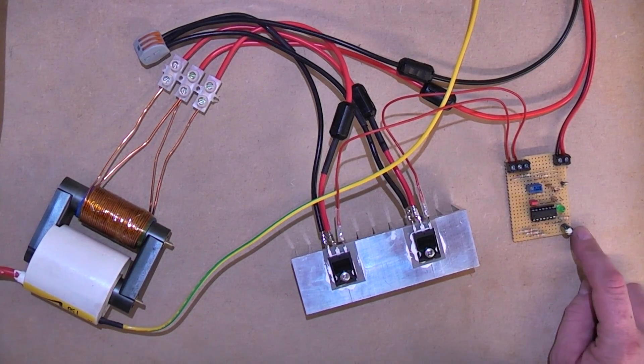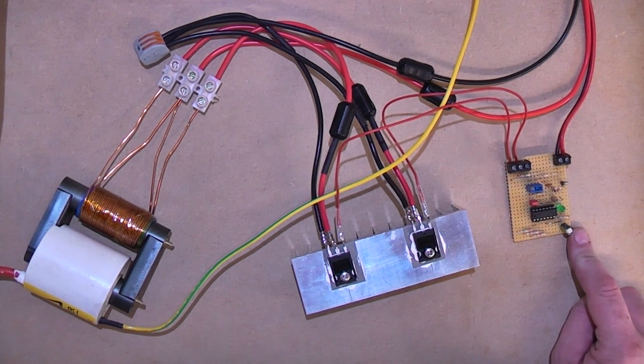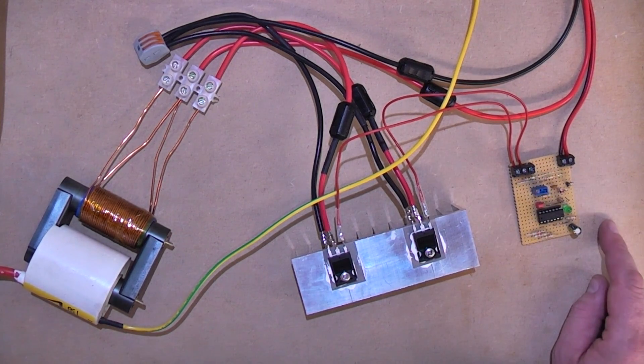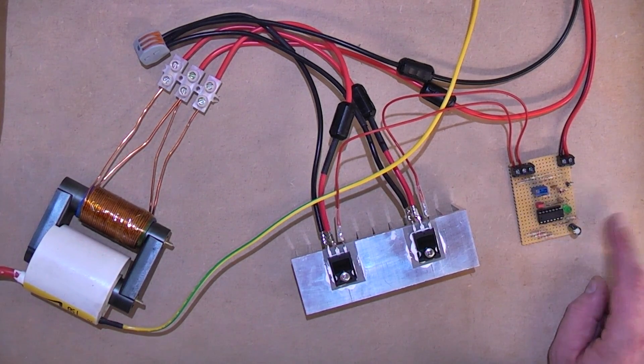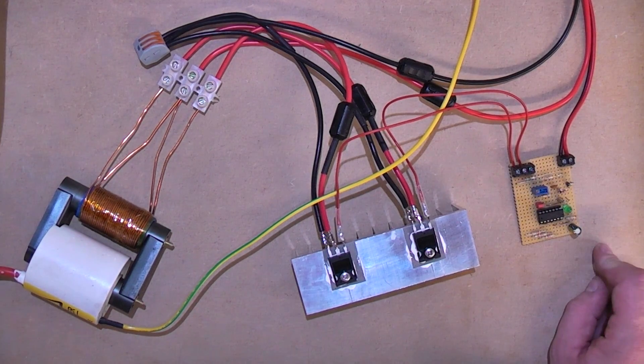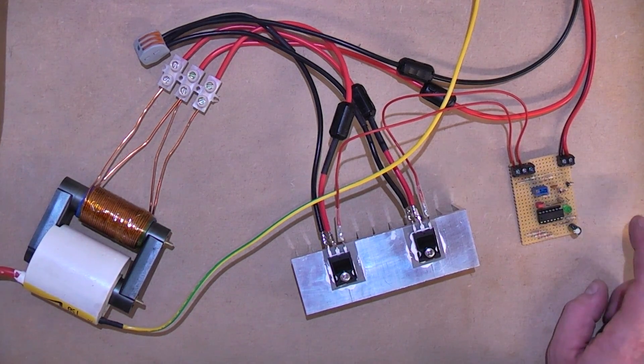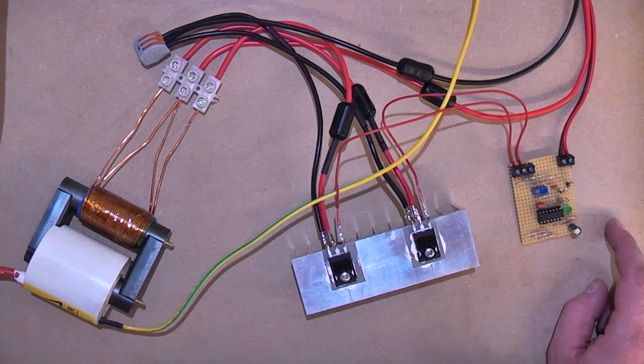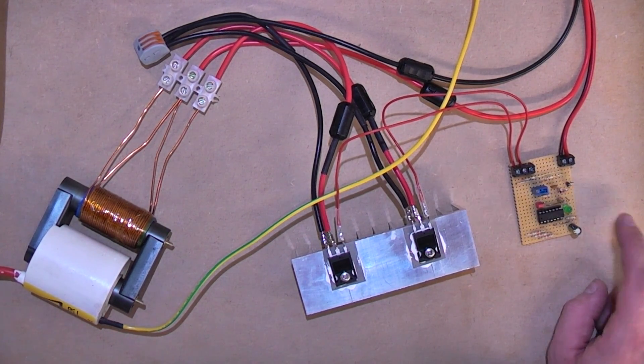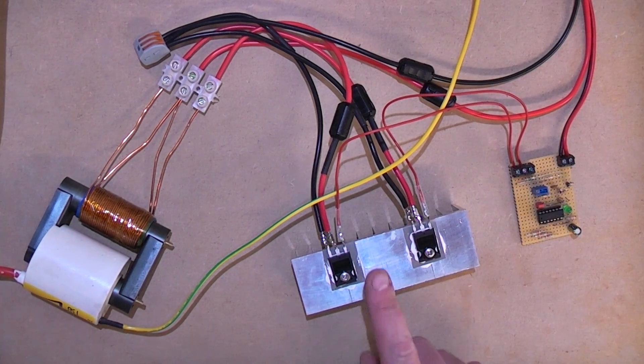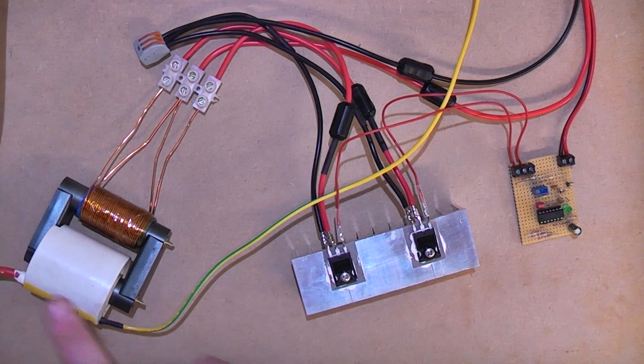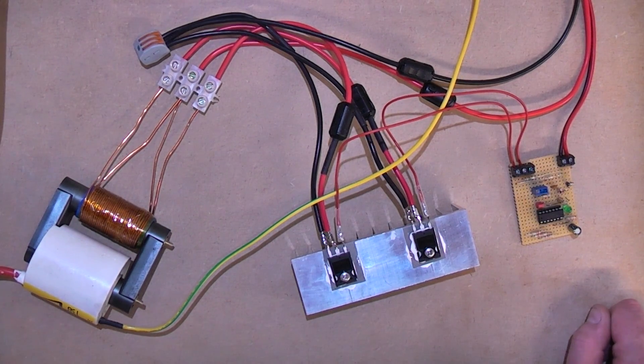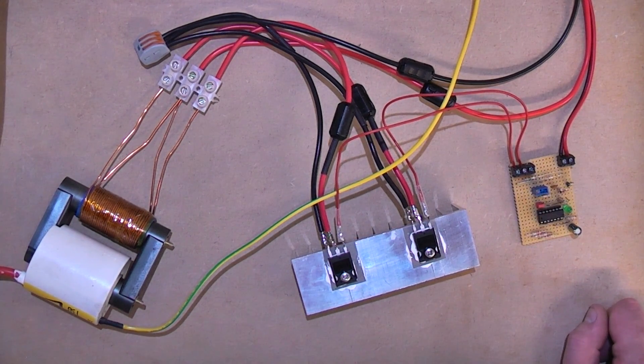The bizarre thing is, if you Google CD4047, it will always show you the similar circuit diagram to this, but it's always been used to drive a line frequency transformer for a DIY inverter. I could not find anybody else that used this same circuit to drive two MOSFETs or IGBTs to power a flyback transformer. No one's done it or no one's done it and put anything online about it. So I thought, well, I'll give it a go.